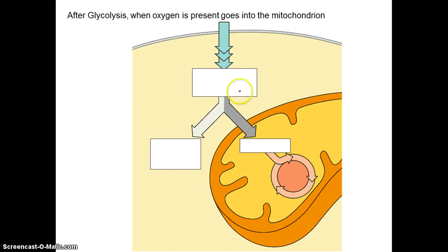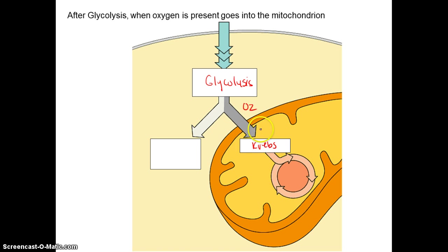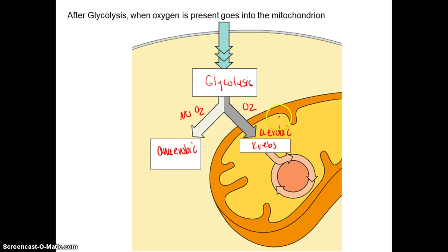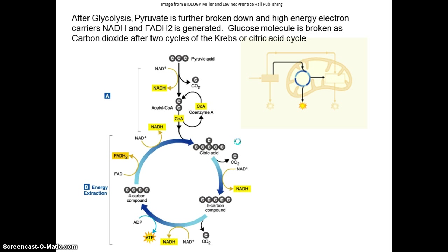After glycolysis, if oxygen is present, the cell will do aerobic respiration and go into the Krebs cycle. If there's no oxygen, then it's what's called anaerobic respiration. Now we're going to talk about the Krebs cycle.